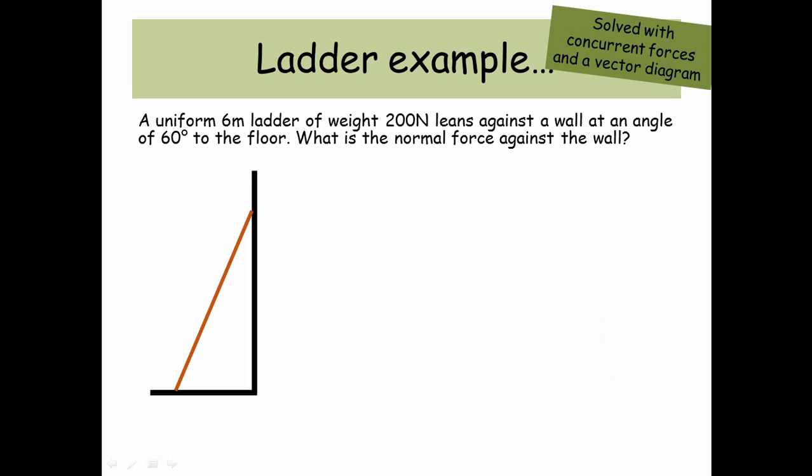Ladder example. Solved with concurrent forces in a vector diagram. So a uniform 6 meter ladder of weight 200 newtons leans against a wall at an angle of 60 degrees to the floor. What is the normal force acting against the wall?